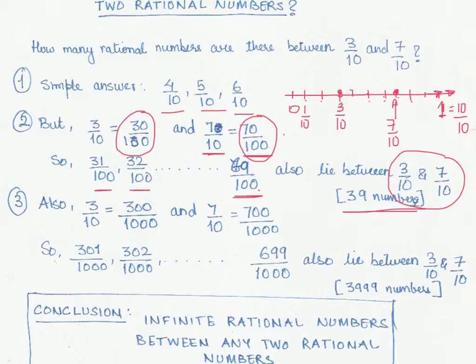It's the same, right? These are equivalent fractions. So 3 by 10 and 300 by 1000 is same; 3 by 10 is just the simplest form.